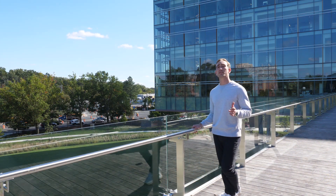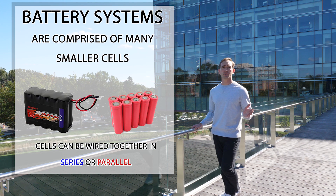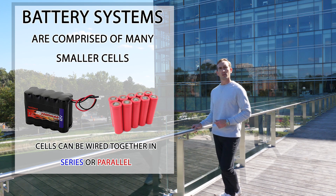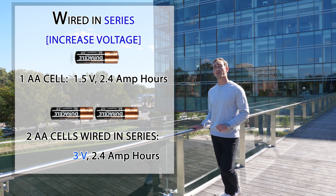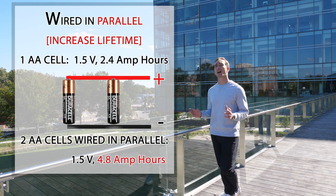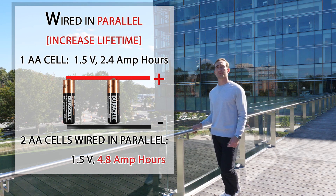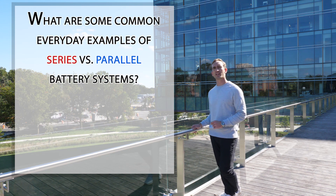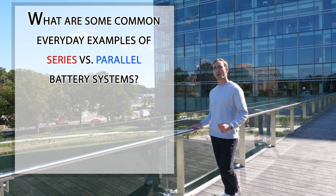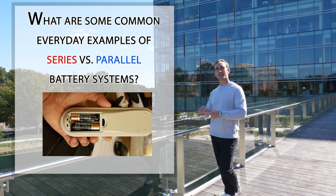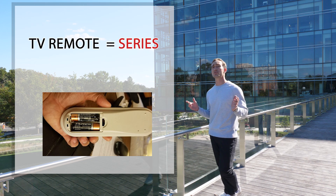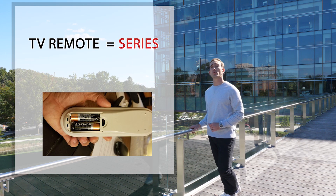Battery systems are usually comprised of smaller individual cells wired in either series or parallel. When you wire two battery cells in series, you increase the voltage while keeping the energy capacity the same. If you wire those batteries in parallel, the voltage remains the same but the energy capacity increases. For example, if you've ever changed batteries in a TV remote, you'd notice they go in opposite directions — those batteries are wired in series to increase the voltage of the system.